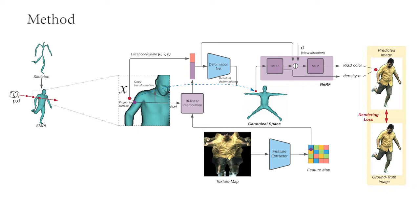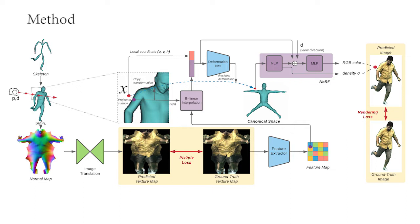The pose-dependent residual deformation and view-dependent color are predicted from the location of X, along with the feature of the nearest surface point of X, which is extracted from a 2D texture map. At training time, we use the ground truth texture map generated from multi-view training images to extract the features of the surface points. At test time, the texture map is predicted from the normal map, which is extracted from the posed SMPL mesh via an image translation network. This network is trained separately with the ground truth texture map as supervision.